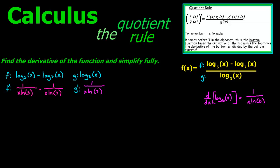Now we multiply using the quotient rule up here: f prime of x times g of x minus g prime of x times f of x, all over g of x squared. For part 1, we multiply f prime by g; for part 2, we multiply g prime by f. Then we take part 1 minus part 2, all over g squared.